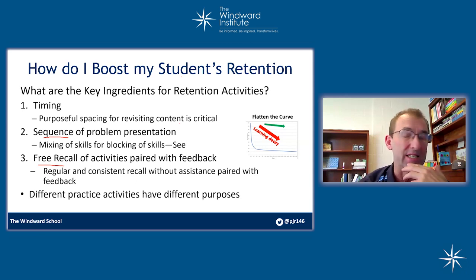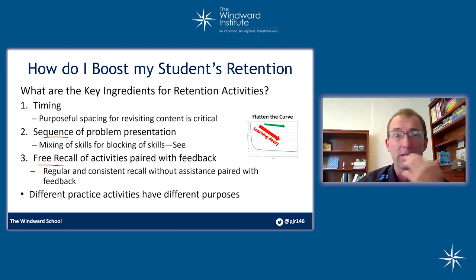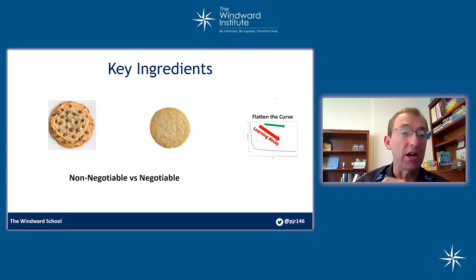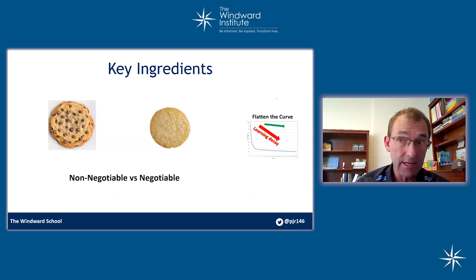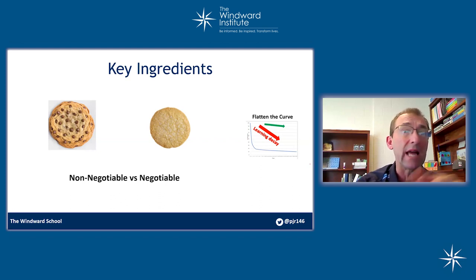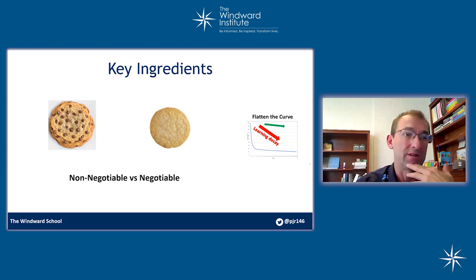Different practice activities have different purposes, and the purposes of all three of these are to keep information accessible to students. I call those components ingredients — and there are negotiable ingredients and non-negotiable ones. My analogy here is baking chocolate chip cookies: a non-negotiable ingredient is chocolate chips. If you don't put chocolate chips in the recipe, you do not get chocolate chip cookies. So if you do not have one of those three elements — timing, sequence, and free recall — you are not helping retention. You're only helping short-term learning.